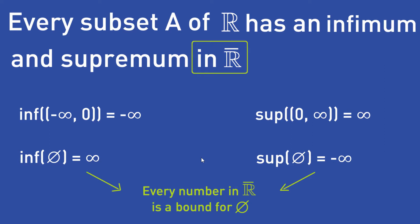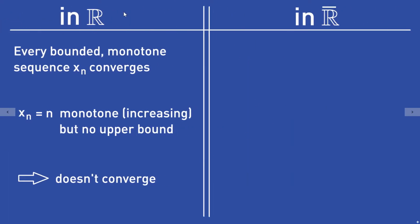There are some often-used theorems, especially for sequences, that change when we consider the extended real numbers instead of the real numbers. I will write the original version on the left and the changed version for the extended real numbers on the right. In the normal real numbers, we have the following theorem for sequences: every bounded monotone sequence Xn converges. For example, the sequence Xn = n is monotonically increasing, but it has no upper bound, therefore it doesn't converge.